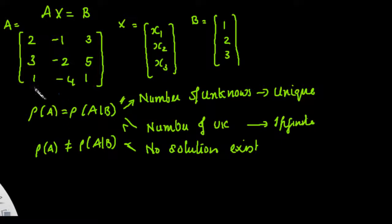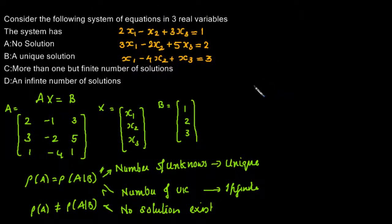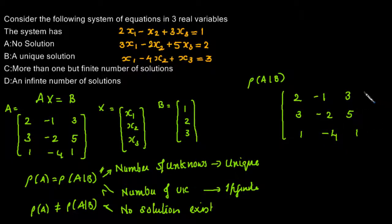We need the rank of A and the rank of the augmented matrix. We will form the augmented matrix: 2, -1, 3; 3, -2, 5; 1, -4, 1 with matrix B: 1, 2, and 3.